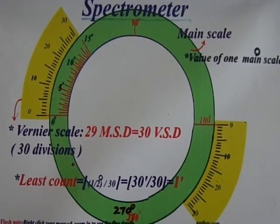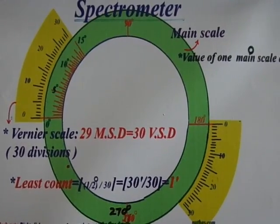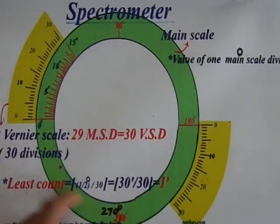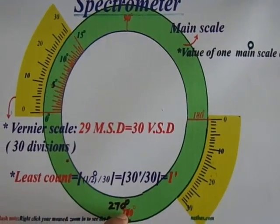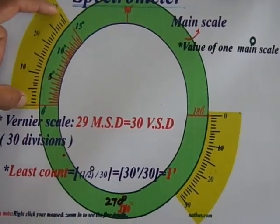Hi, in this video we are about to see the spectrometer and how to take readings using the spectrometer device. Before getting into it, let us see the least count of the device. The vernier scale is having 30 vernier scale divisions.